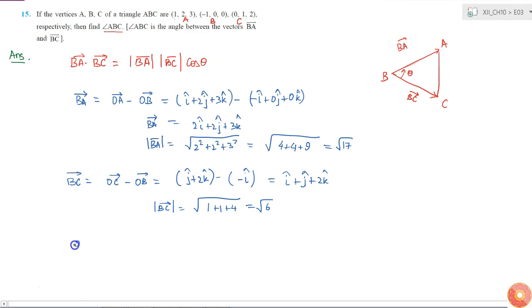BA dot BC will be 2 times 1 plus 2 times 1 plus 3 times 2. So cos theta will be equal to 2 plus 2 plus 6 by root 17 into root 6.